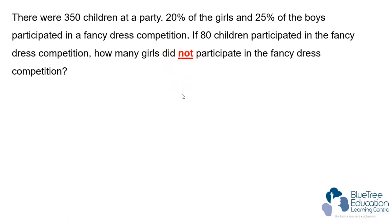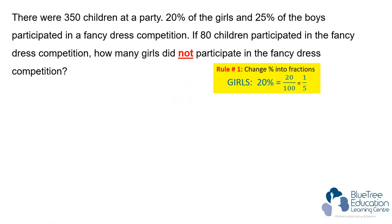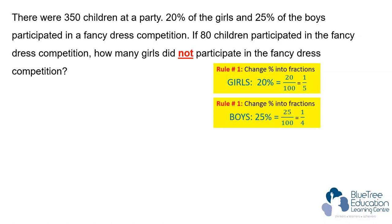Whenever you see percentage in this question, the first rule is to always change percentage into fractions. So girls is 20% that participated in the fancy dress competition — change it to one-fifth. Change 25% into one-quarter.